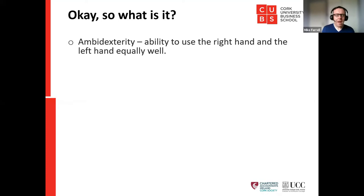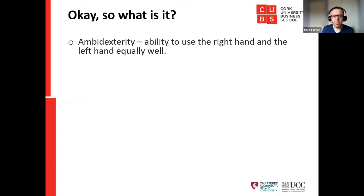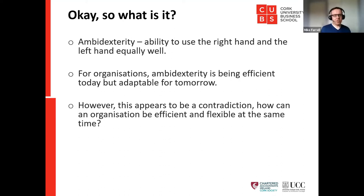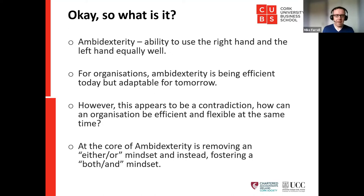So what is ambidexterity? Most people know it means the ability to use the right hand and left hand equally well. For organisations, ambidexterity means being efficient today but adaptable for tomorrow — two opposing tasks. The problem is this appears to be a contradiction: how can you be efficient and flexible at the same time? At the core of ambidexterity is removing the either/or mindset and fostering a 'both/and' approach.